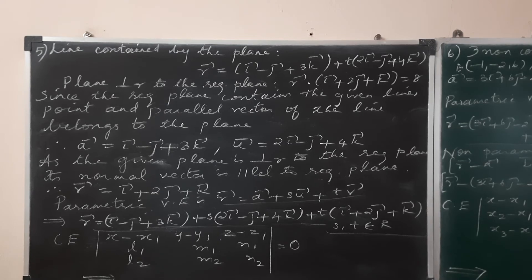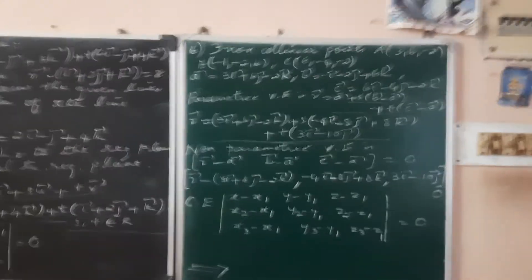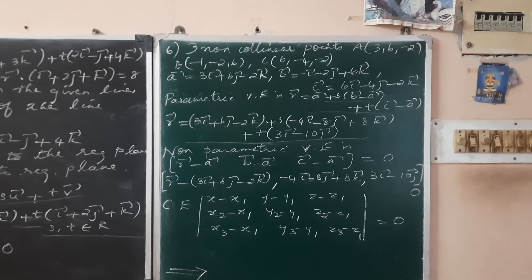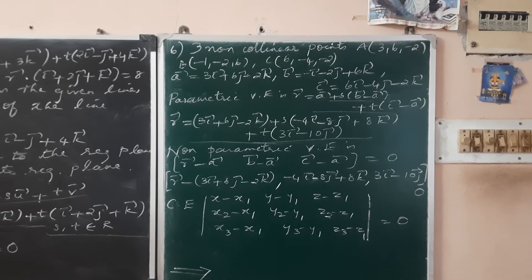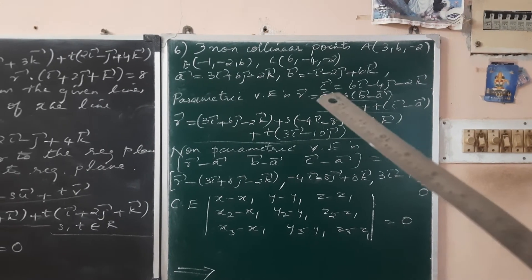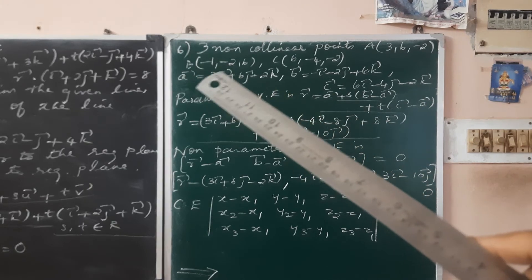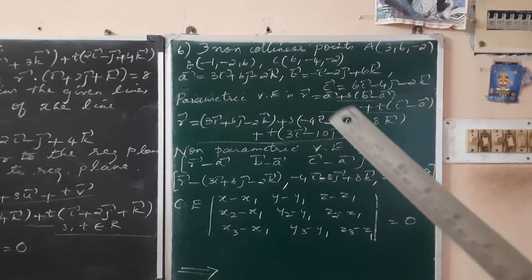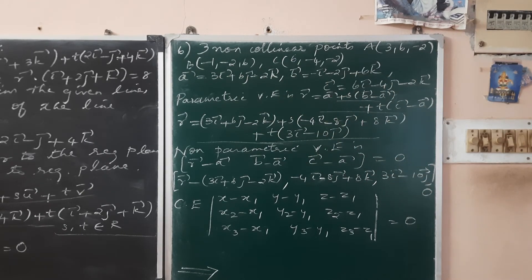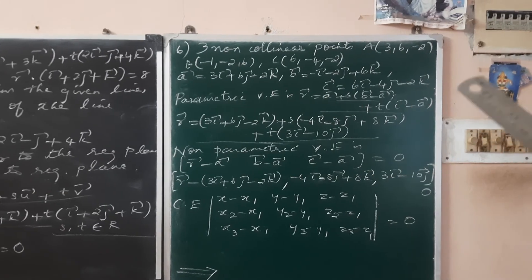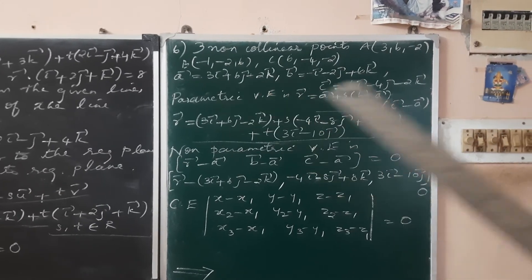Sixth problem. The data is very simple. Three non-collinear points lying on the required plane are given as (3, 6, minus 2), (minus 1, minus 2, 6), and (6, minus 4, minus 2). We need the position vectors a, b, and c for each point.